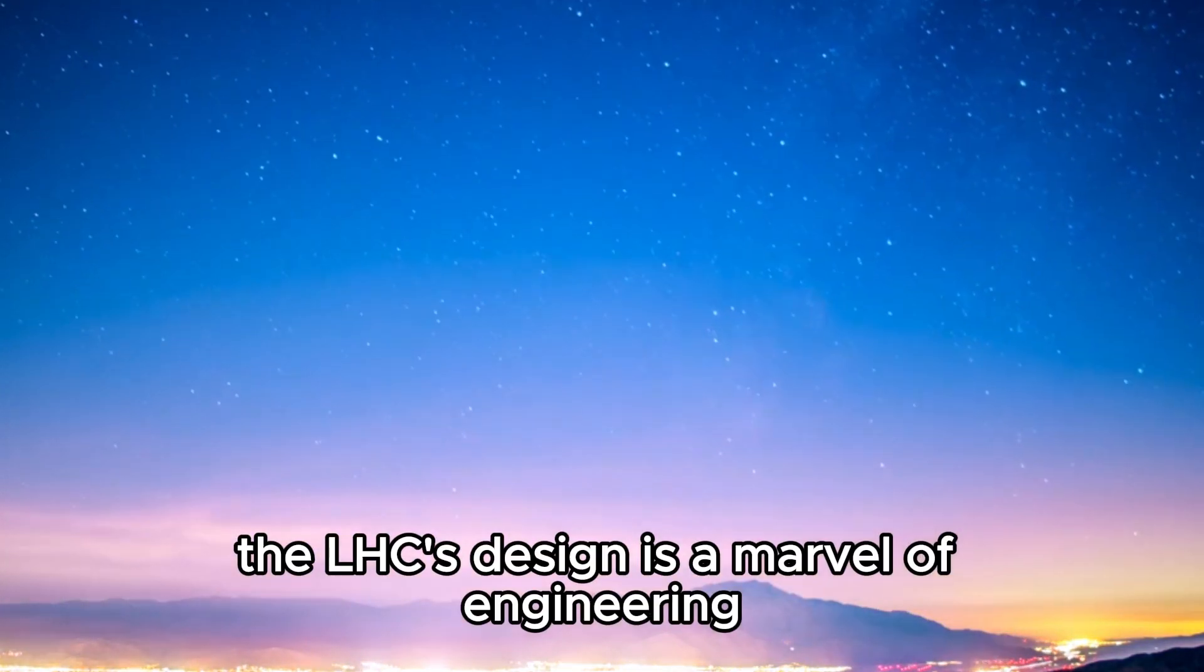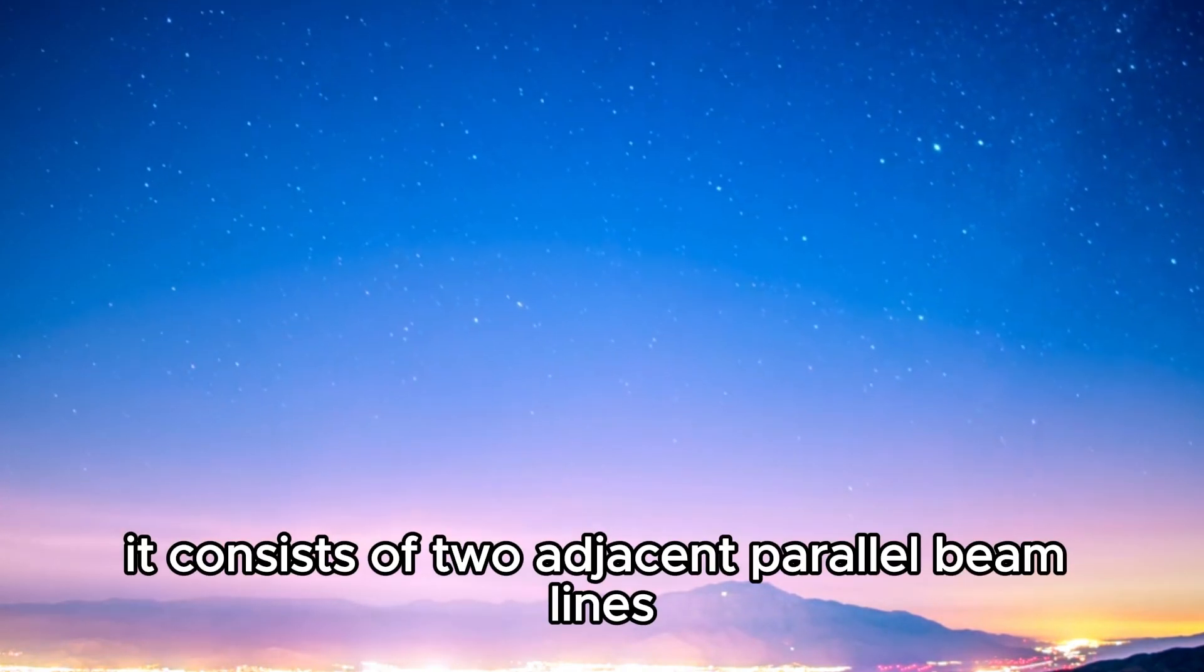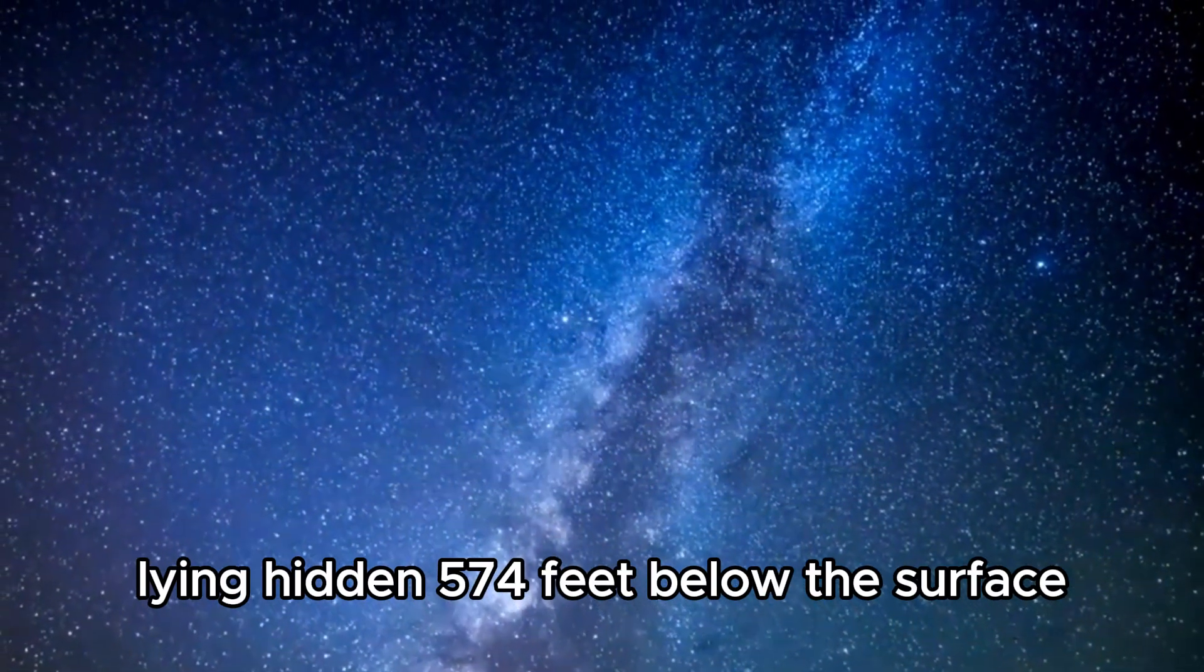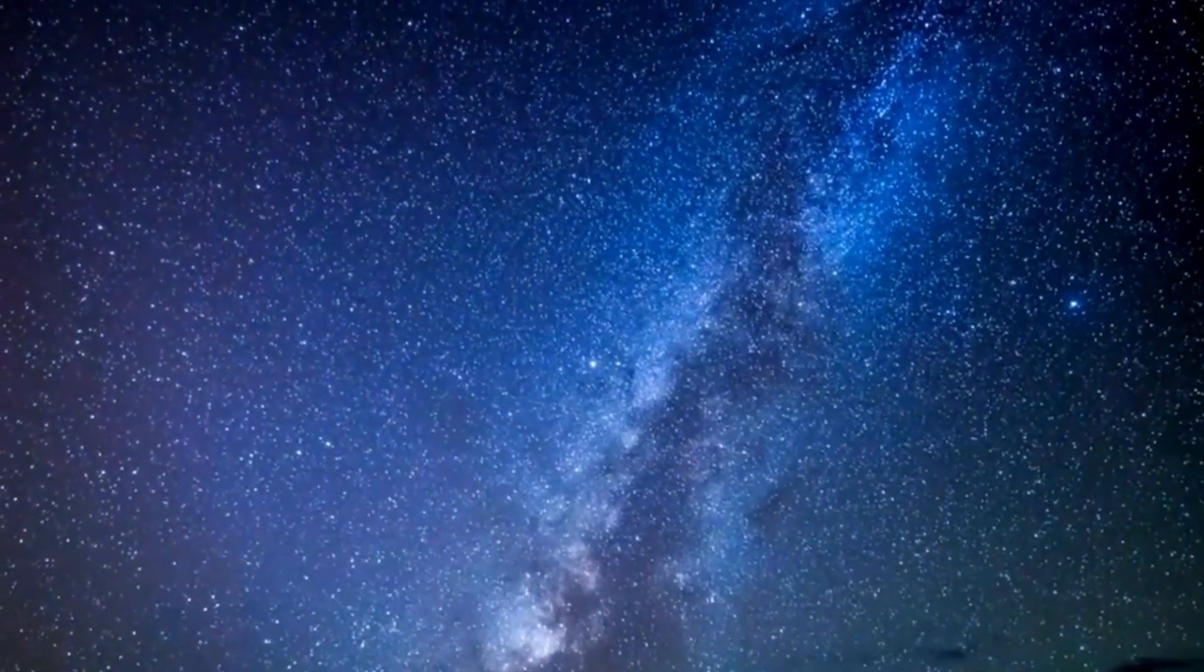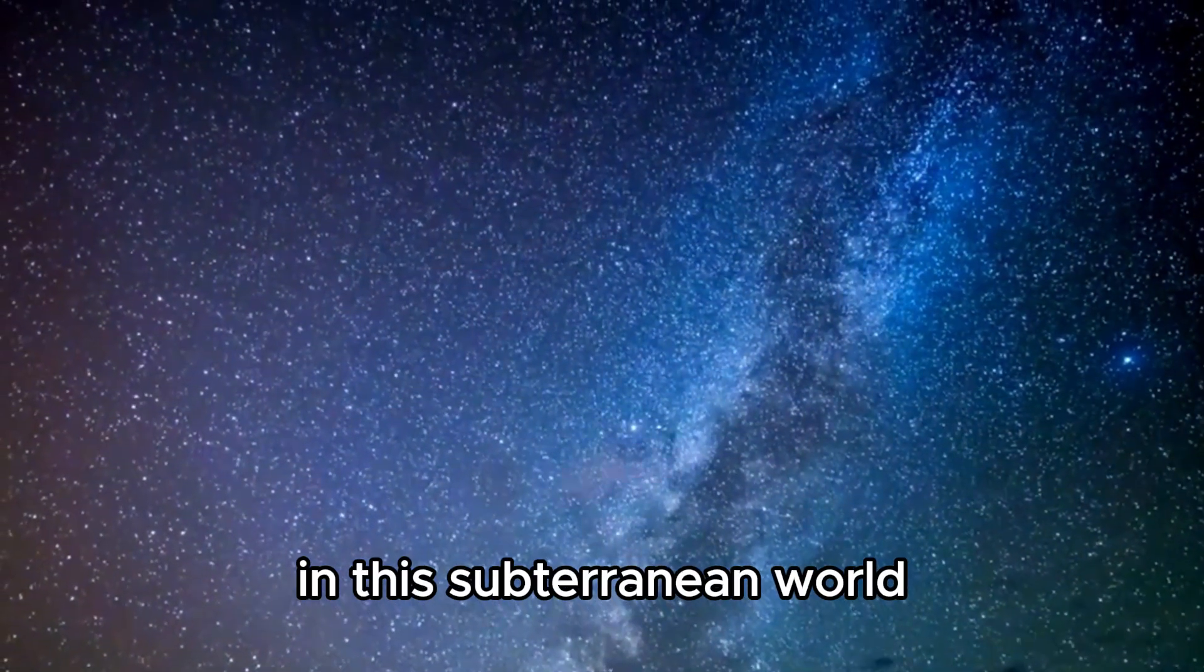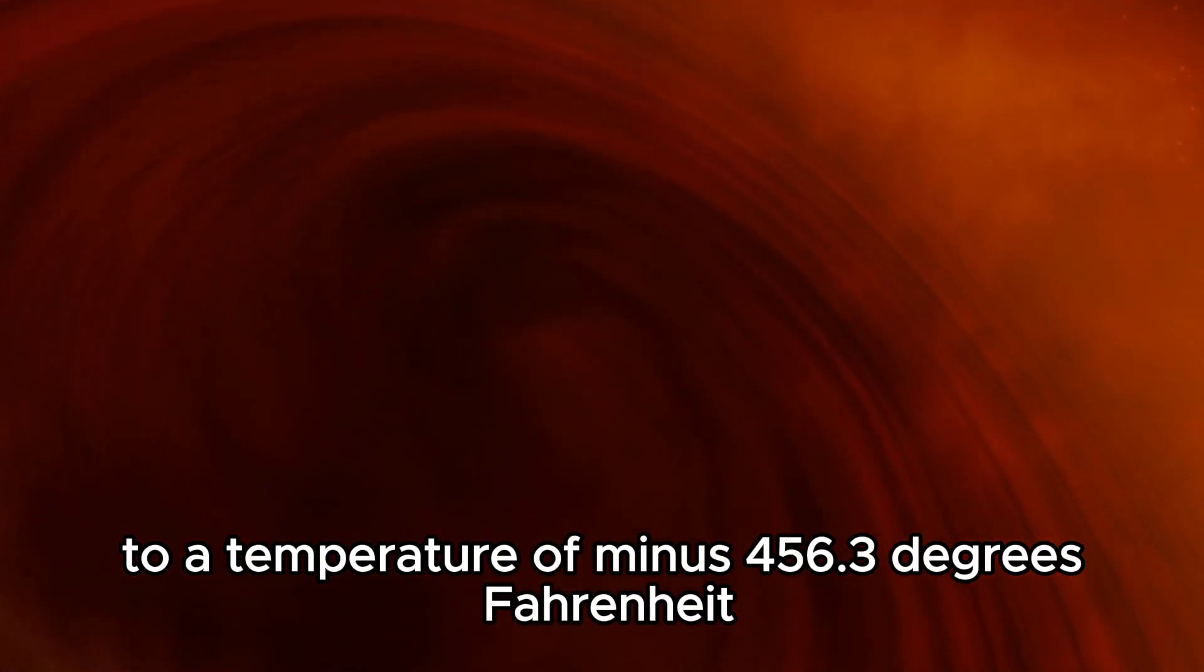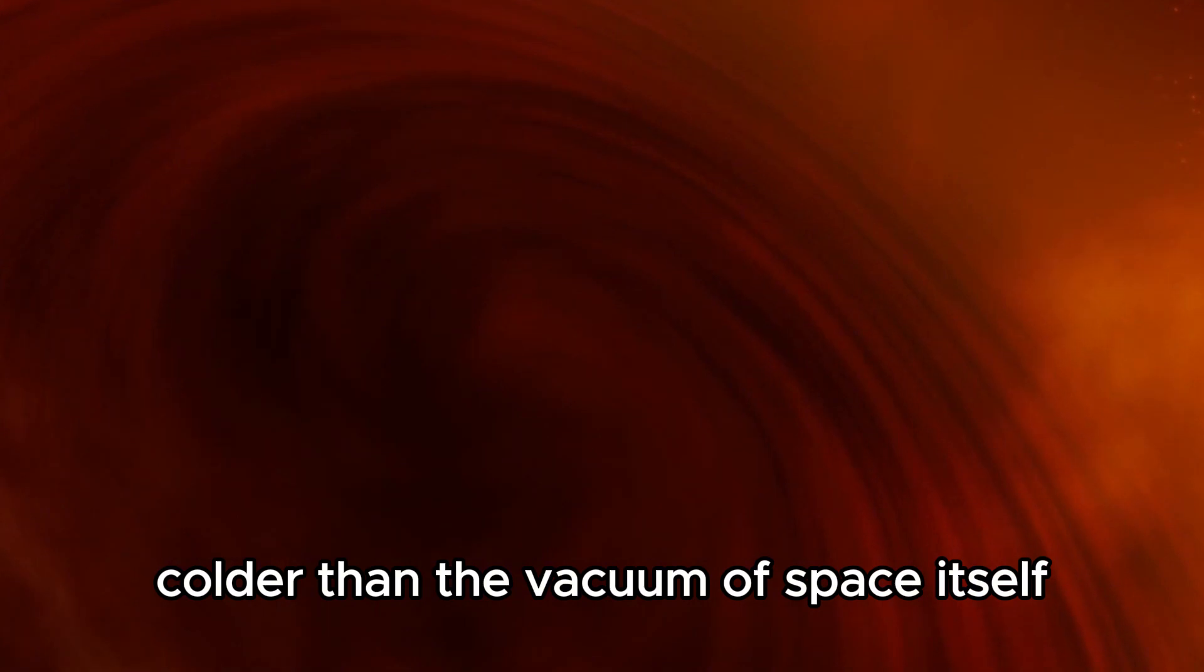The LHC's design is a marvel of engineering. It consists of two adjacent parallel beam lines lying hidden 574 feet below the surface, shielded from Earth's radiation. In this subterranean world, the entire system is cooled to a temperature of minus 456.3 degrees Fahrenheit, colder than the vacuum of space itself.